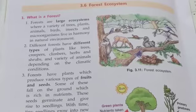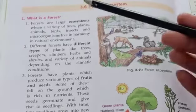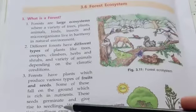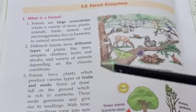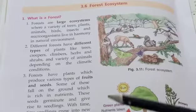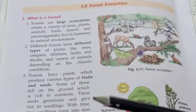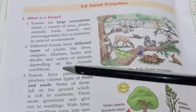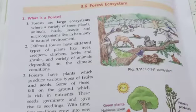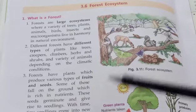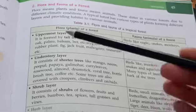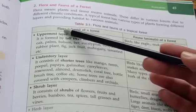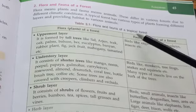Now the next topic is the forest ecosystem. What is a forest? A forest is a large ecosystem where there are varieties of trees, plants, animals, birds, insects, and microorganisms which are formed in a natural environment. One important term here is flora and fauna — biologically, plants are referred to as flora, whereas animals are referred to as fauna.